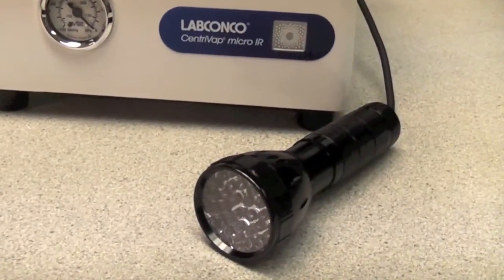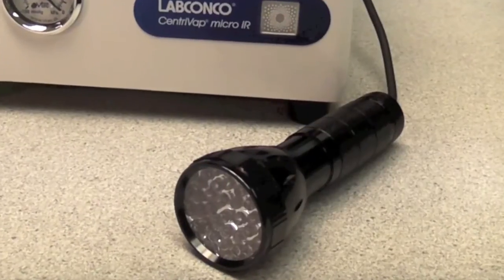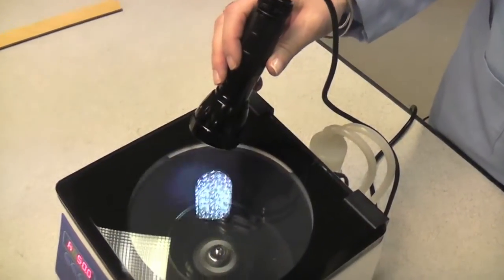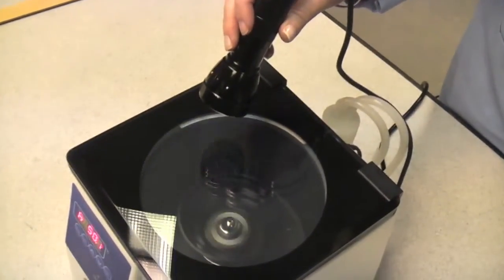The CentriZap strobe light shines light into the chamber to easily view samples while the rotor is spinning. The samples appear to be standing still. Since there is no need to stop the run to check on sample progress, evaporation time can be reduced by 20 percent.